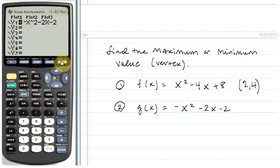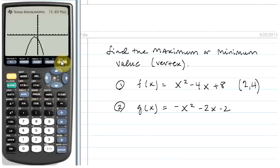When we hit graph, we get the parabola that we expected, but notice that this parabola is opening down. So the vertex is a maximum value.